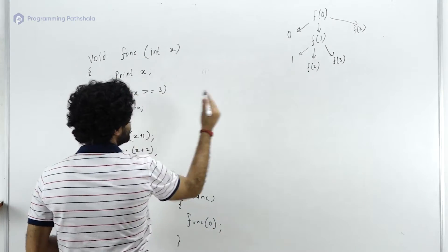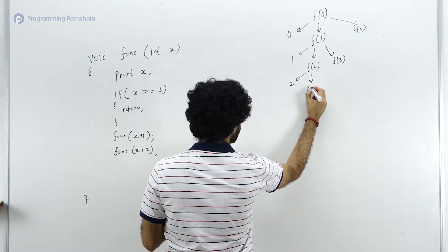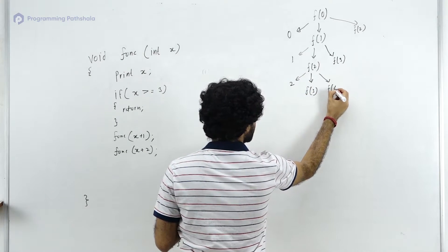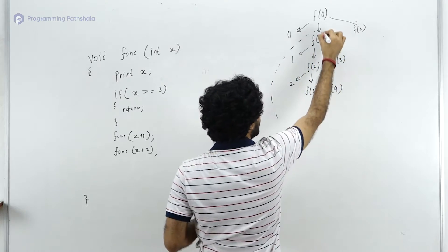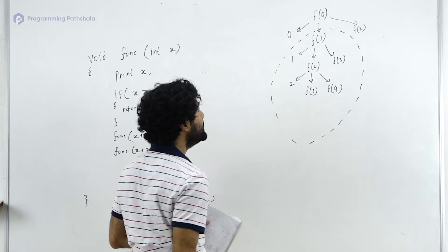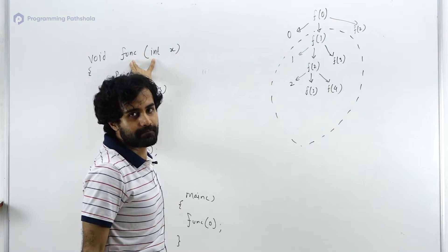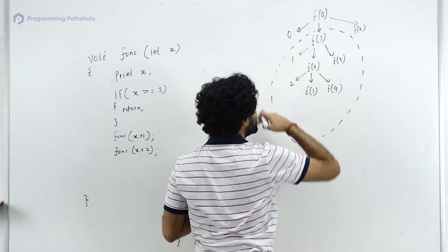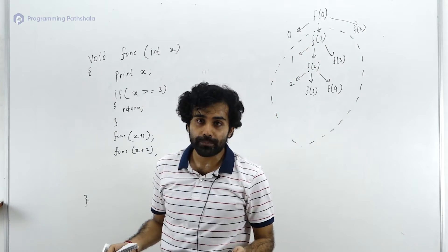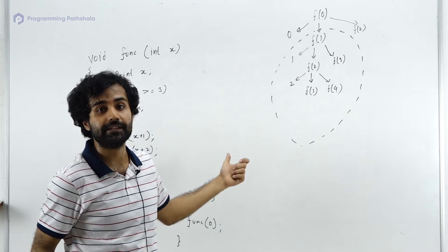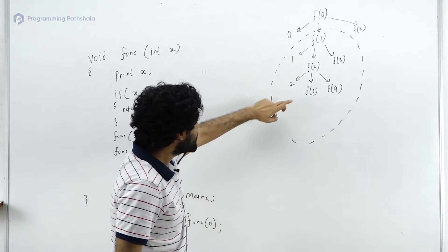Now f(2) starts. It prints 2; the condition is false for x=2, so it calls f(3), and then f(4) is placed on hold. Any subtree rooted at a particular function call represents the output of the recursion if it had been initiated with that value of x.